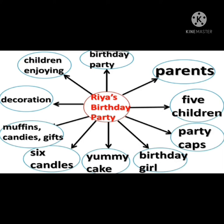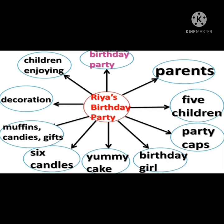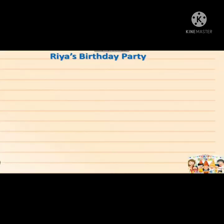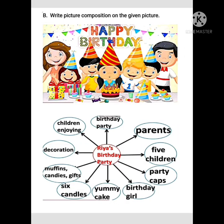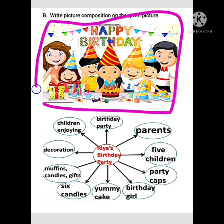To write the composition, we start by using the theme. First we write the theme: Rhea's birthday party. After that, start your sentences by using these points which I have already told you. You have to make a picture composition description on this picture. This picture along with these points is also given to you in your PDF file, and you have to make a paragraph or sentences on it.